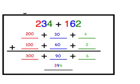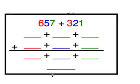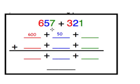Let's try another example using the place value strategy. Our next example is 657 plus 321. First we need to figure out what 657 is written in expanded form. The 6 in the hundreds place has a value of 600, the 5 in the tens place has a value of 50, and the 7 in the ones place has a value of 7. So 657 in expanded form is 600 plus 50 plus 7.